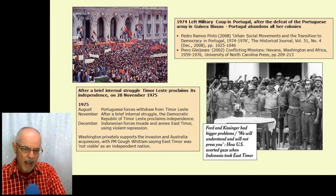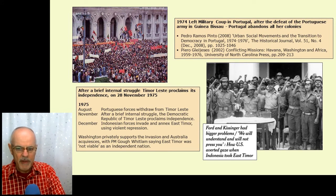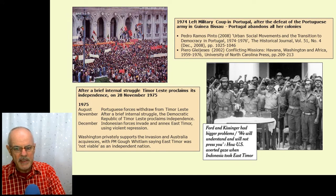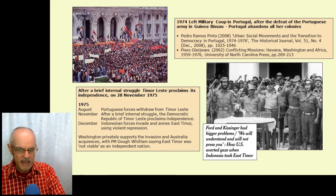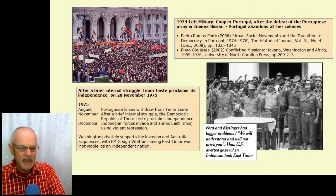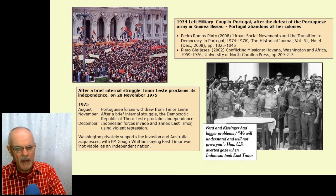The attitude of the Western powers was telling. Washington privately supported the invasion — you see the headline from the New York Times: Ford and Kissinger had bigger problems, and Kissinger said we will understand and will not press you, just don't use our weapons. In Australia, Labor Prime Minister Gough Whitlam said East Timor was 'not viable' as an independent nation. So there was no help from the Western powers who were in a position perhaps to do something at that time.